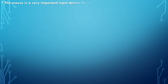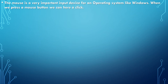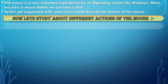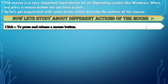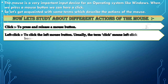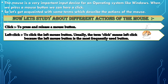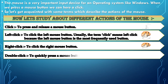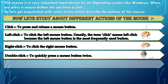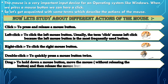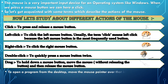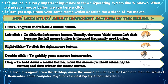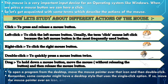The mouse is a very important input device for an operating system like Windows. Let's get acquainted with some terms describing the actions of the mouse. Click: press and release a mouse button. Left click: click the left mouse button — usually the term 'click' means left click as it is the most frequently used button. Right click: click the right mouse button. Double click: quickly press the mouse button twice. Drag: hold down a mouse button, move the mouse, then release. To open a program from the desktop, move the mouse pointer over that icon and double click. Some computers use a single-click option — move the pointer over an icon and click once to open.